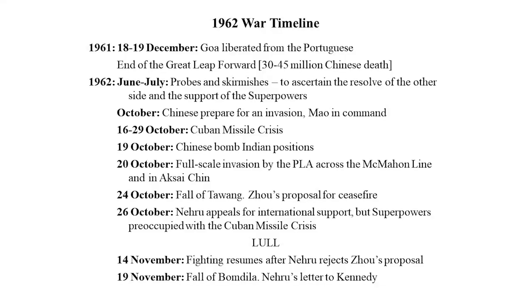Eventually, Nehru refused to accept Chou En-lai's proposal, and Chou En-lai also refused to amend his proposals. On 14th November — interestingly, Nehru's birthday — the PLA restarted attacks. The Indian Army still could not defend itself. By 19th November, Bomdila fell, the PLA reached Assam, and they could have invaded the Brahmaputra Valley. The Indian Army withdrew from Tezpur, a very important military base.